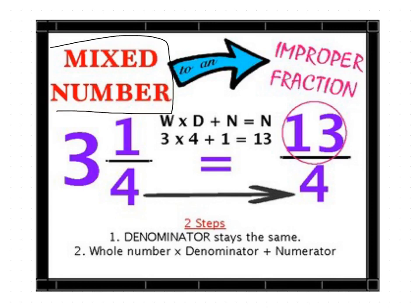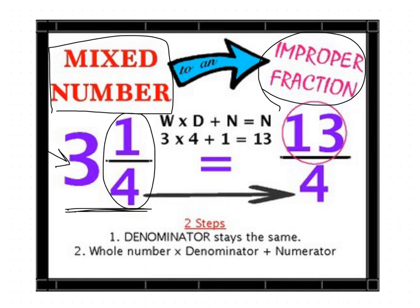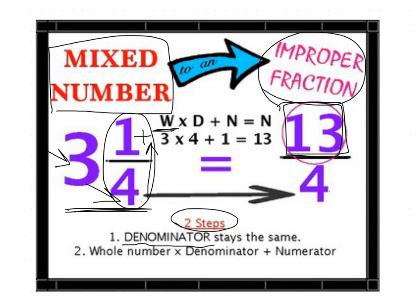Let's convert another mixed number to an improper fraction. It's mixed because it has a whole and a proper fraction. Keep the denominator the same — don't change it. Then multiply the whole by the denominator: 3 by 4 is 12. Add the numerator: 12 plus 1 is 13. So the answer is 13/4.